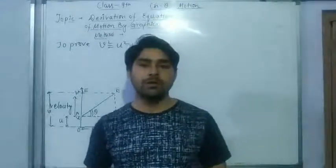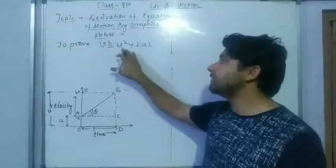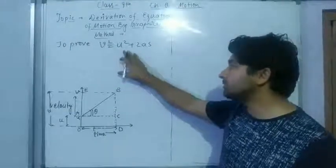Okay, now we move with equation number 3, equation of motion 3 which is v² = u² + 2as. Now to derive this,